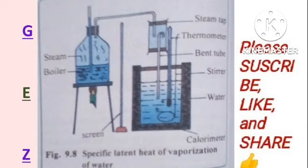A screen is usually placed between the boiler and the calorimeter to prevent the latter from receiving heat directly from the boiler, thereby preventing heat transfer by convection and radiation. The passing of dry steam into the calorimeter is stopped when the temperature of the water rises by about 30 degrees Celsius. Using this setup, you use the known masses to calculate the specific latent heat of vaporization of the steam.